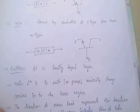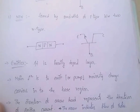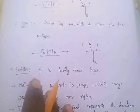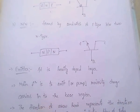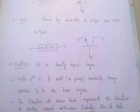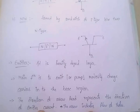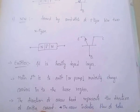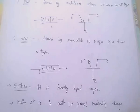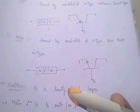The main function of the emitter is to emit or pump majority charge carriers into the base region. The direction of the arrowhead represents the direction of emitter current. The arrow indicates flow of holes — very, very important.